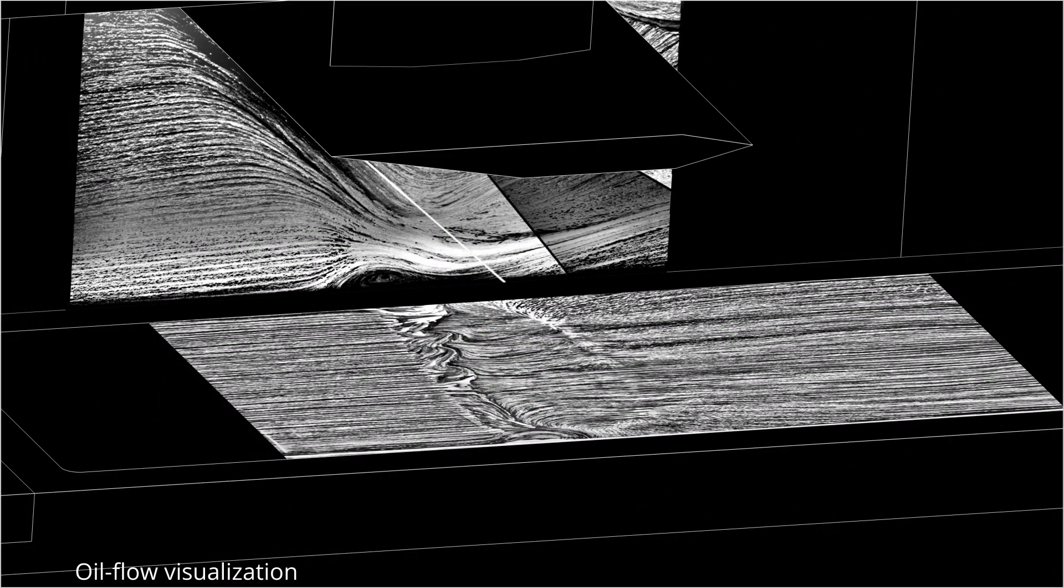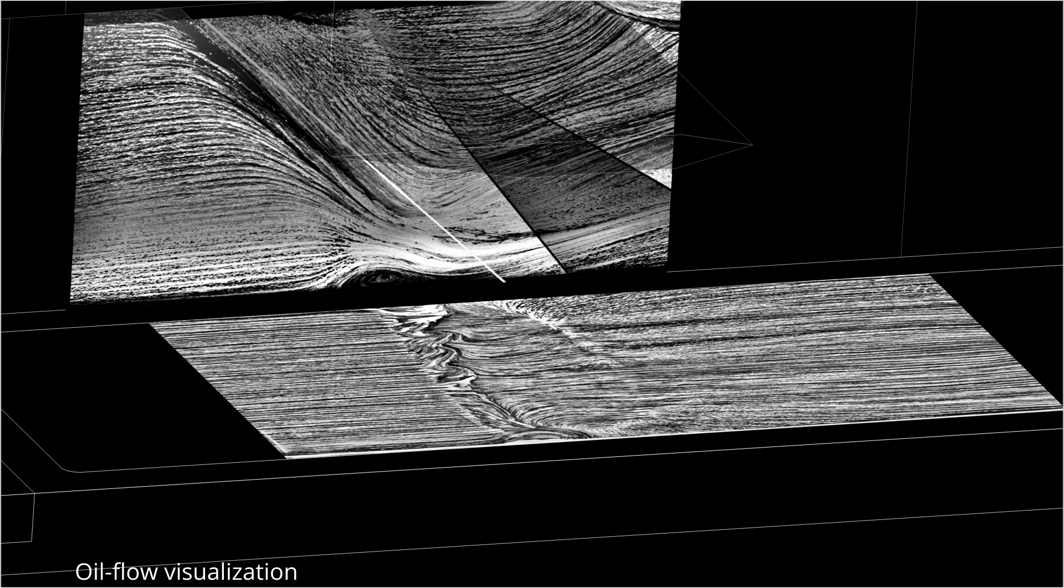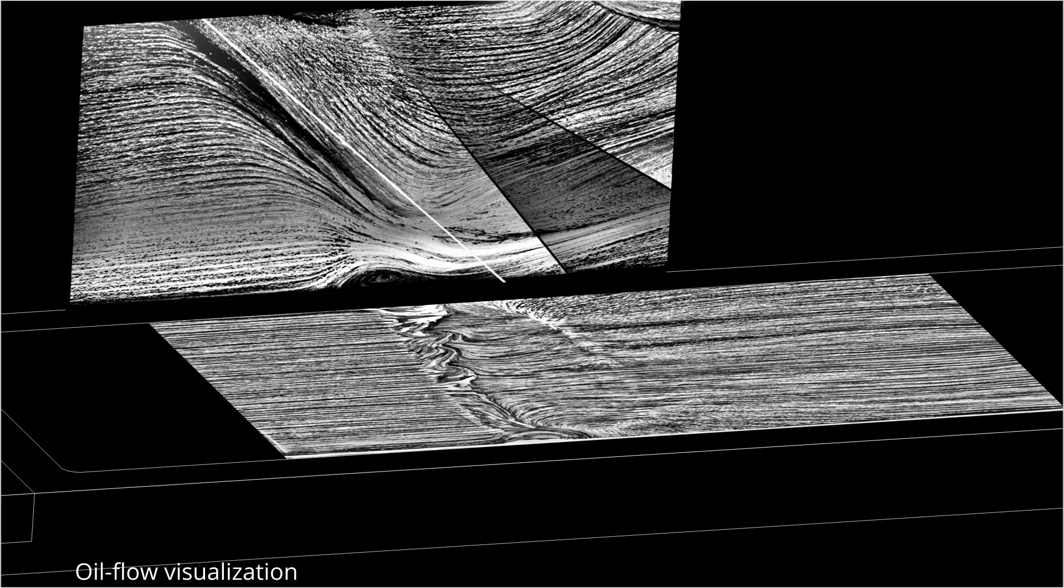In addition to the nominally 2D closed interaction on the wind tunnel floor, the full-span shock generator creates a 3D, sharp-thin, open interaction on the wind tunnel side wall. This interaction is characterized by a conical symmetry and the so-called upstream influence that causes the streamlines to change direction before the primary shock is reached.